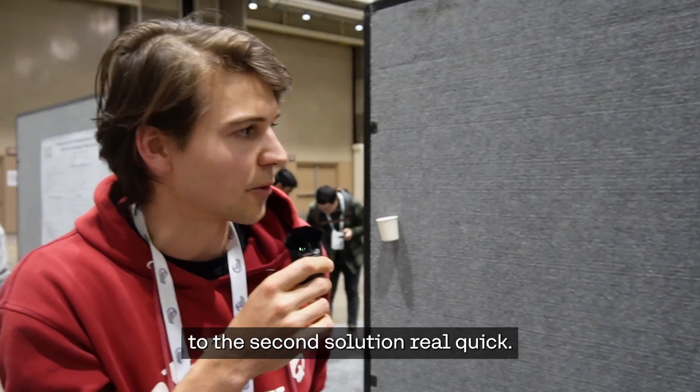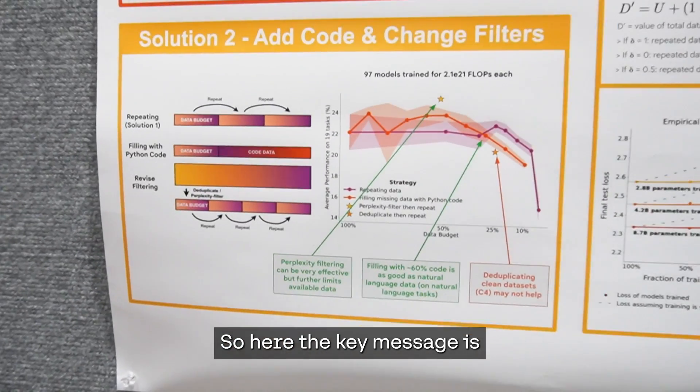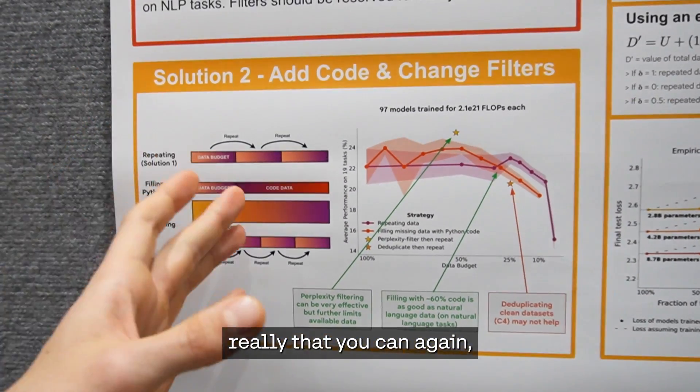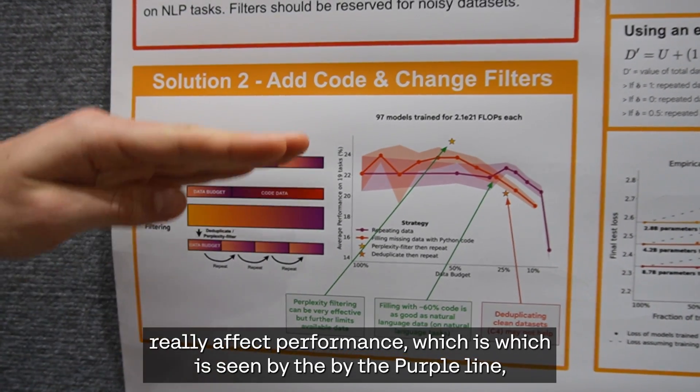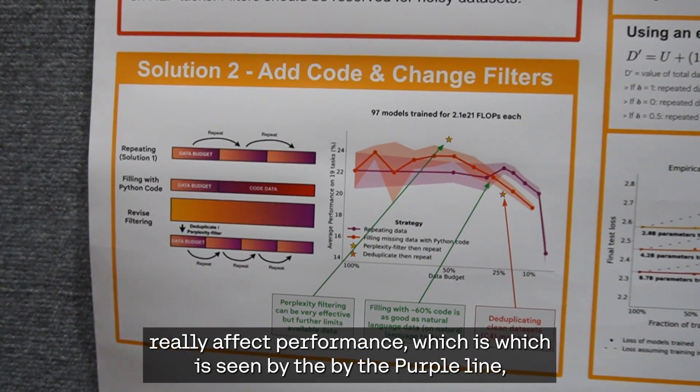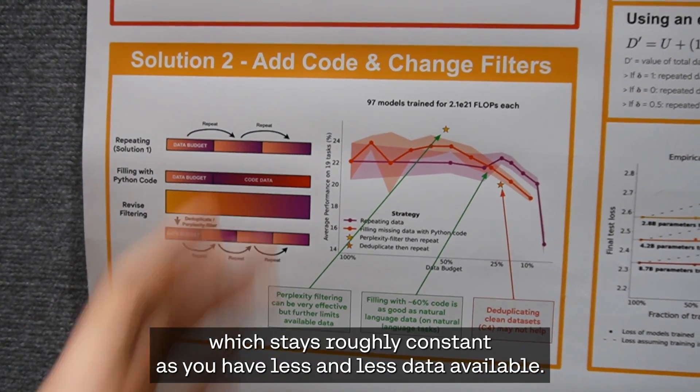Now we're going to move on to the second solution. Here, the key message is that repeating on downstream performance doesn't really affect performance, which is seen by the purple line where it stays roughly constant as you have less and less data available.